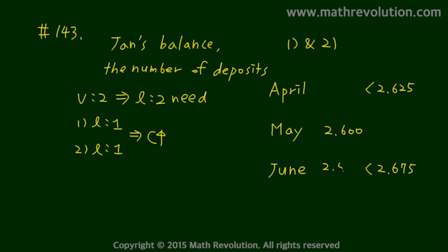Now, in June, the only possible thing is either $2,550 because of the withdrawal, or $2,720 of the deposit, but that can't be because it has to be less than $2,675.